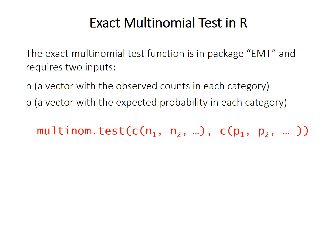The exact multinomial test function isn't available in the basic version of R — you'll need to install the package called EMT. This function requires two inputs: a numeric vector containing the observed counts in each category (however many you have), and a corresponding numeric vector with the expected probabilities for each category. Remember to use the c() function to combine numbers into a vector. The probabilities must be numbers between zero and one and must add up to one.